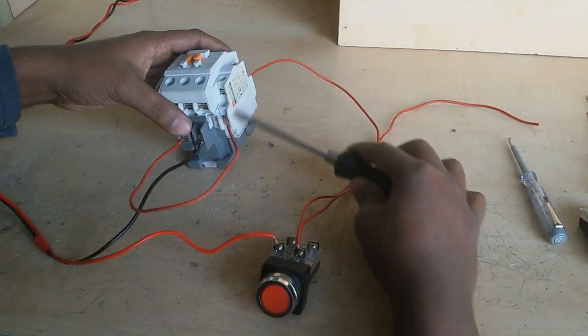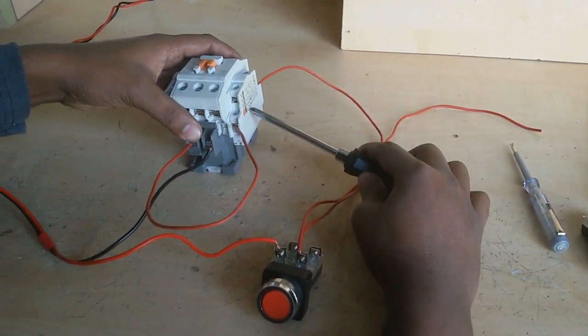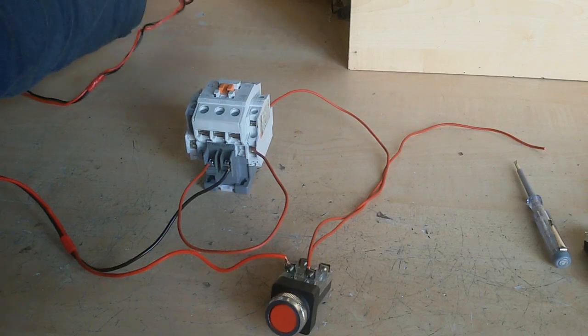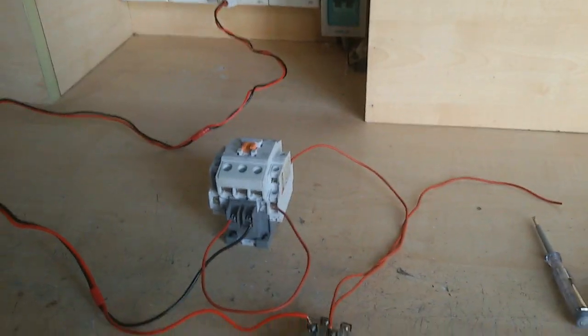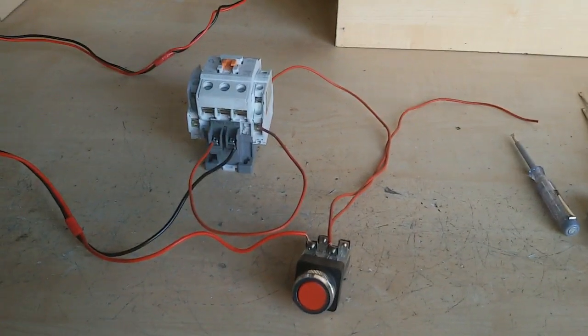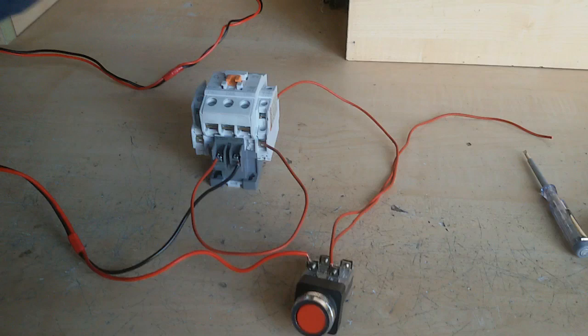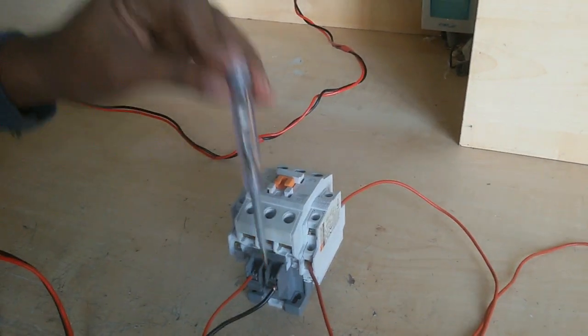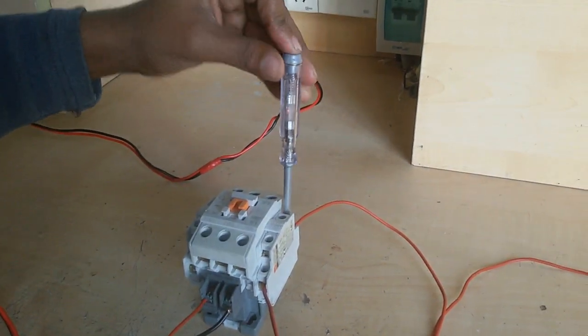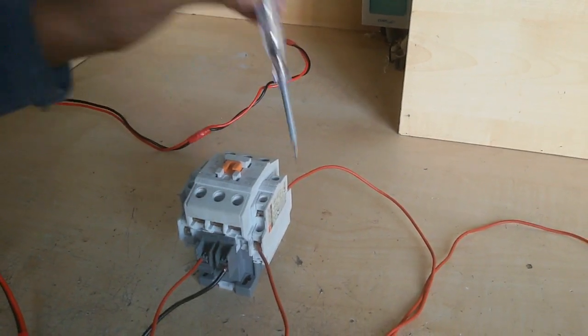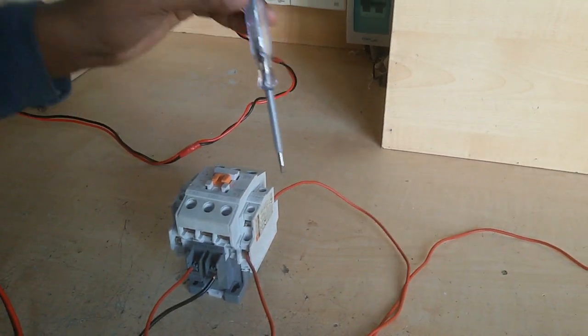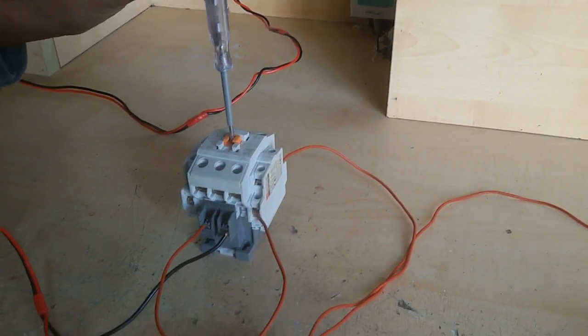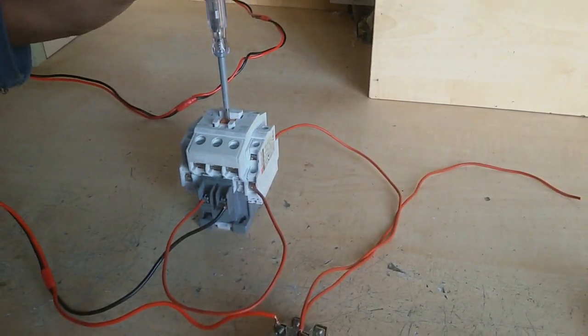This is a switch, a NO, normally open. If this position, I connect the supply line. In this moment, I supply line. This is neutral and this is phase, but it cannot power this line. When I push this it will start.